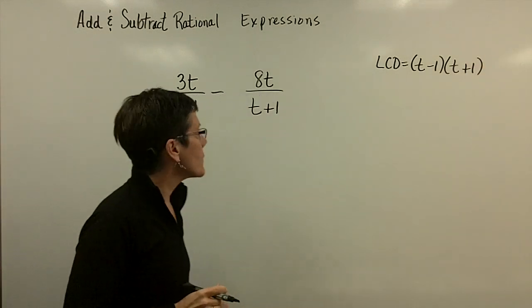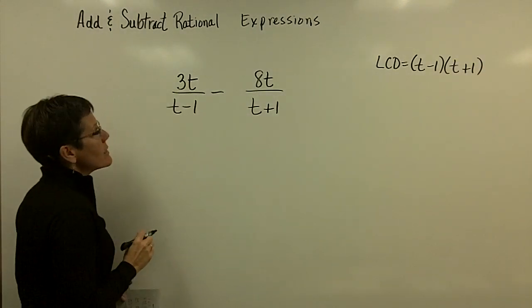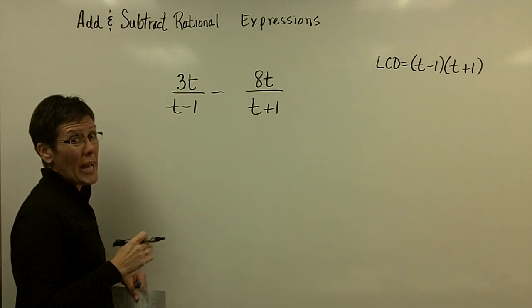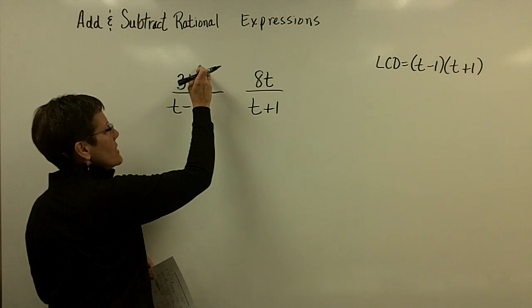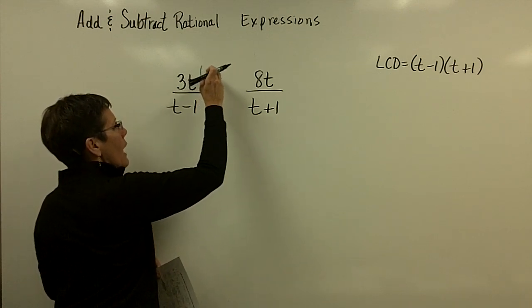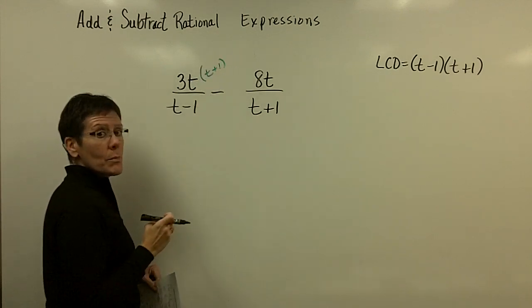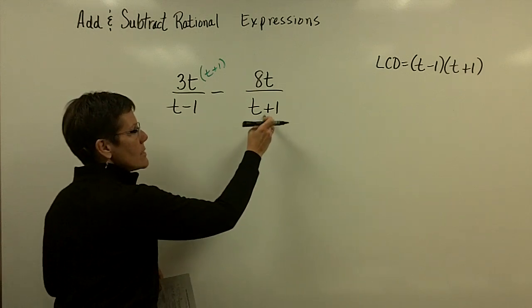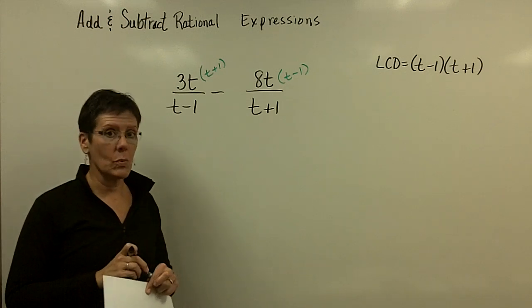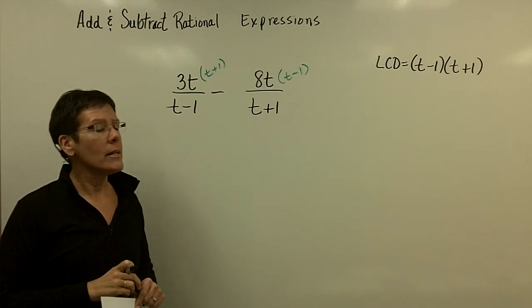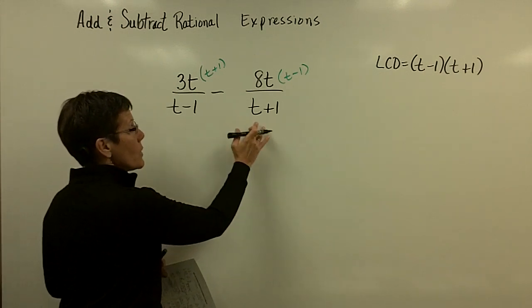So this fraction right here is missing the t plus 1. If anybody is ready—I don't think I'm going to do this—but if anybody is ready to just say to themselves, oh, I got to multiply this numerator by t plus 1, and this denominator is missing t minus 1, oh, I got to multiply that numerator by t minus 1, you're welcome to do that. But just please remember you are subtracting two fractions.